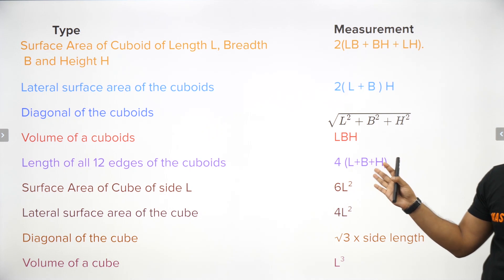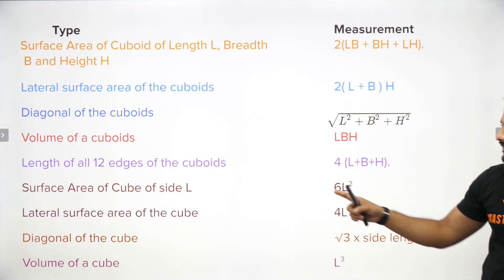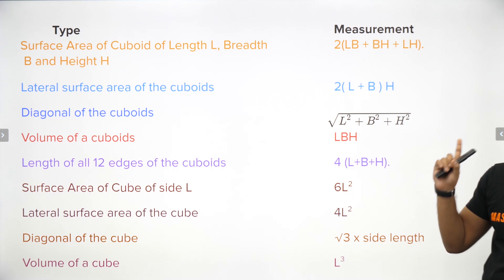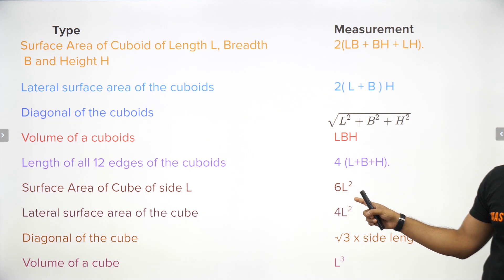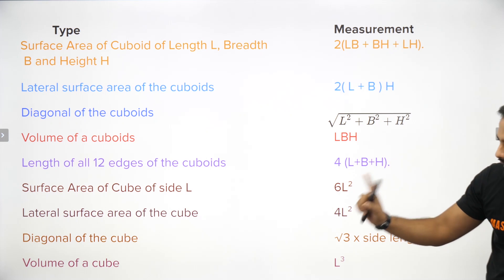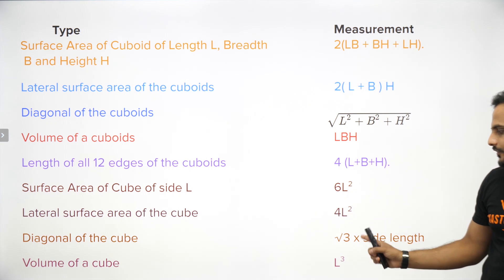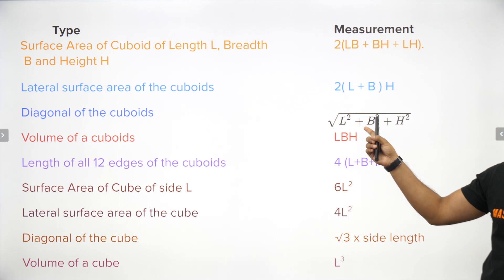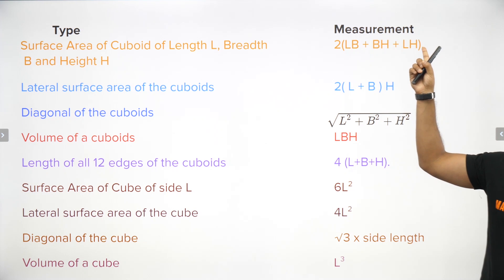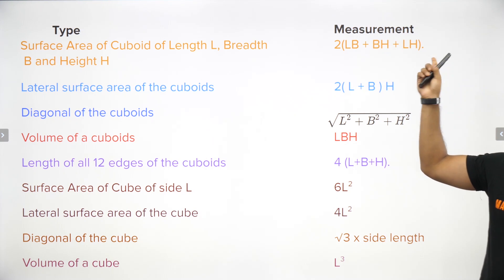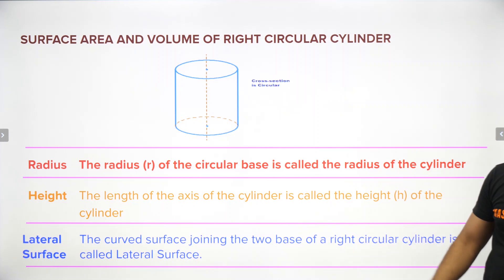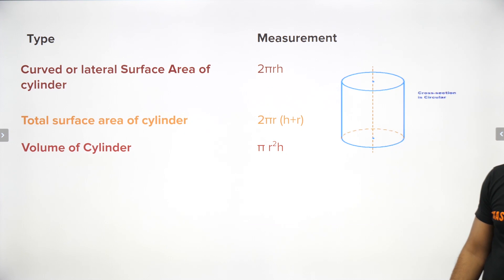Surface area of a cube: total surface area is 6l², lateral surface area is 4l², and the body diagonal is √(l² + b² + h²) — since l = b = h for a cube, you just substitute to get all the formulas.